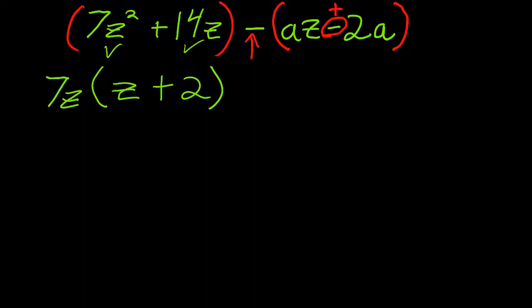As always, I don't trust myself that much, so I go ahead and I distribute the 7Z to the Z and to the two. Now 7Z times Z is 7Z squared, and 7Z times two is 14Z. So I factored the first set of parentheses correctly.